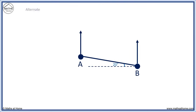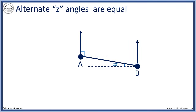Here we want the bearing of B from A. Alternate Z angles are equal, therefore 20 degrees and this angle here are the same — they make a Z and must be equal. The bearing of B from A is this angle: we have 90 degrees plus 20 degrees, which is 110 degrees.